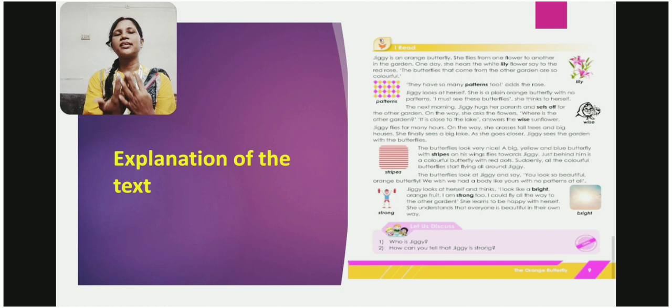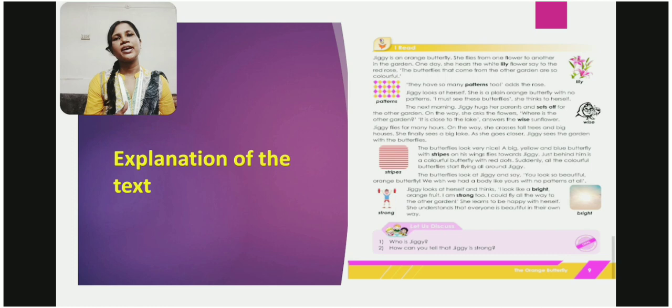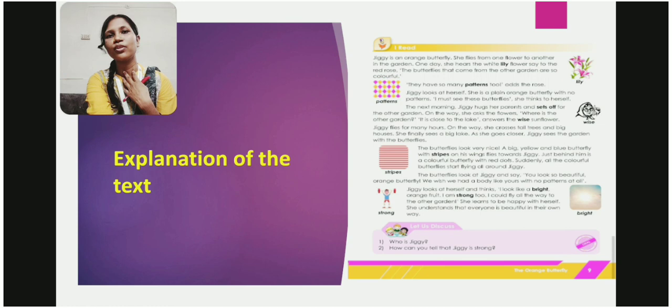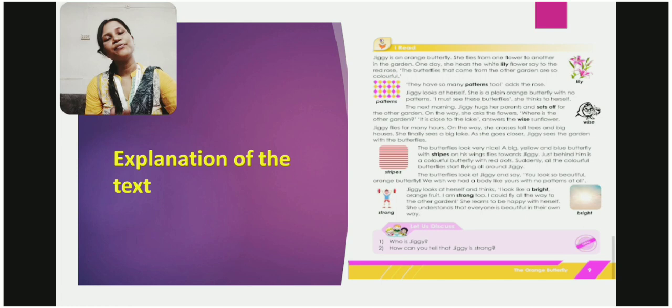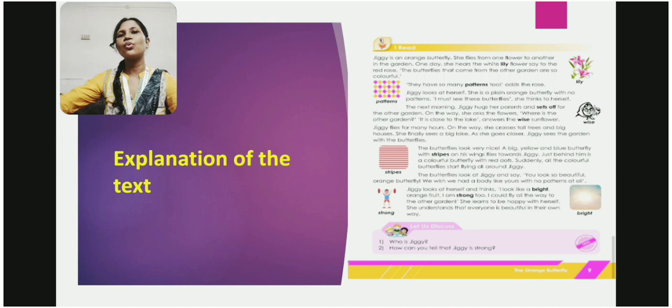And among them, one of the butterflies told her that you are so beautiful butterfly with no patterns at all. And you are having such orange, beautiful color. We wish we could also have a body like you. After hearing that, Jiggy became so happy from inside. And Jiggy thought, yes, I am like an orange fruit. And I am also strong because I could fly from so long distance. And finally, she understands that everyone is beautiful in their own way.